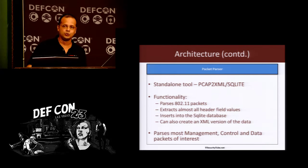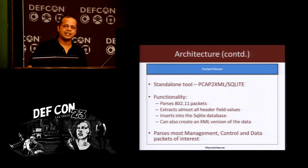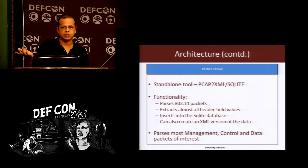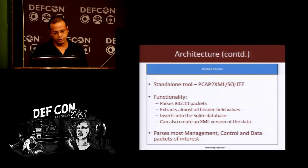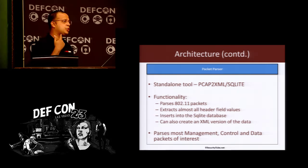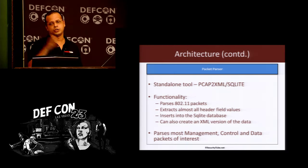The packet parser is a standalone tool which can be used for many other purposes. In Chigula we convert packets into SQLite databases, but the standalone PCAP-to-XML-and-SQLite tool can also convert packets into XML so you can write XQuery and XPath queries. The focus of Chigula is SQLite, but both formats are available. We currently parse most management, control, and data packets of interest — all the subfields inside a beacon frame can be parsed, so you could write arbitrary queries searching for a specific information element in beacon frames across your packet traces.